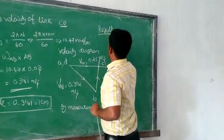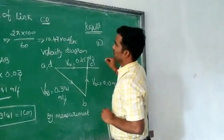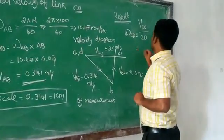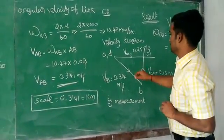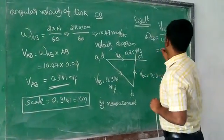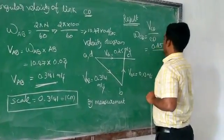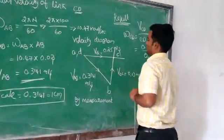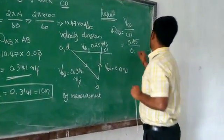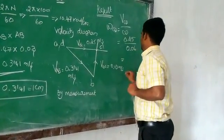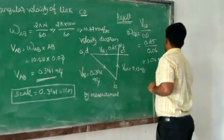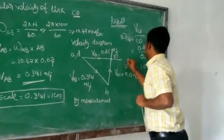The angular velocity omega CD equals velocity of CD over length of CD. So velocity of CD, 0.25, divided by the length of CD, 0.06. So we calculate 4.185 radians per second. This is the answer for omega CD.